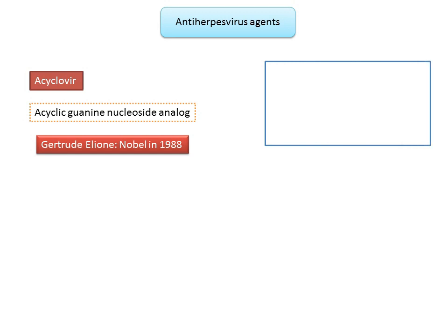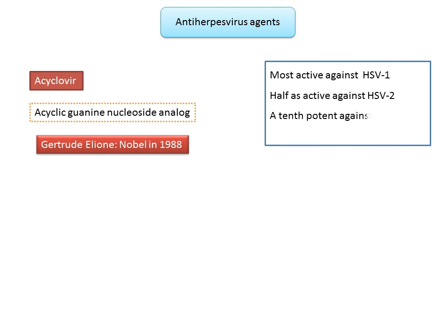Acyclovir's clinically useful antiviral spectrum is limited to herpes viruses. In vitro, acyclovir is most active against HSV-1, approximately half as active against HSV-2, one-tenth as potent against varicella-zoster virus and Epstein-Barr virus, and least active against cytomegalovirus and human herpesvirus 6.